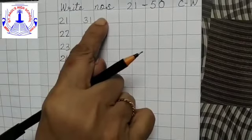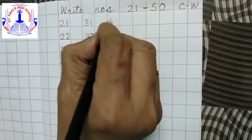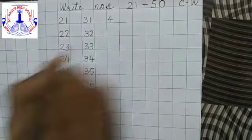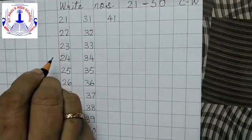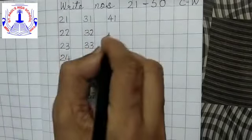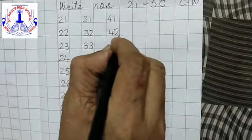Now leave 1 block and write 4 and 1, 41. 4 and 2, 42.